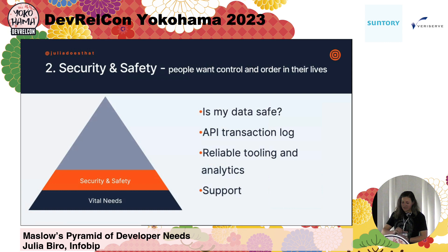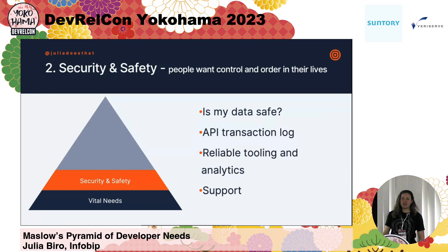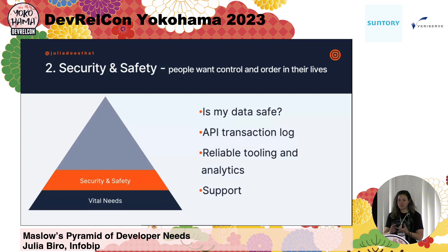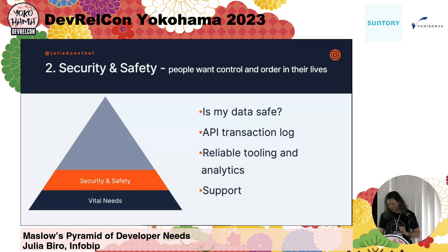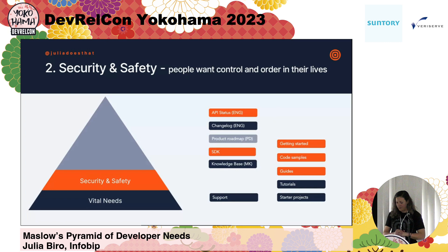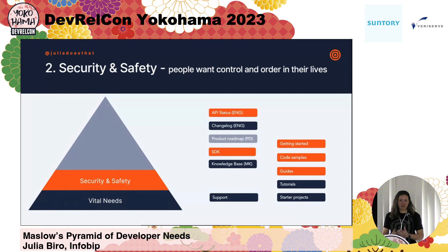Moving on to the next level. According to Maslow, that's security and safety. He explains it as people wanting control and order in their lives. In a development context, I interpret that as: do I know what I'm doing? Is it traceable — do I have an API transaction log? Can I see my API requests? What went wrong? Is the service up? Maybe I want an API status page as well. Is support available? And also, all the compliance-related things — is my data safe?